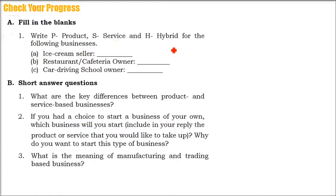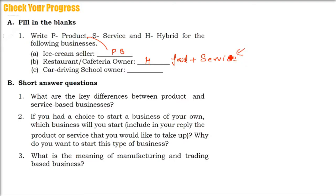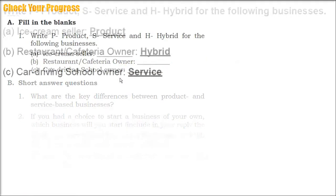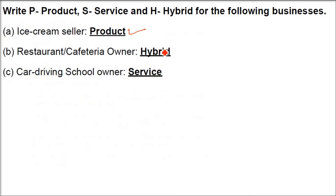Now for Q&A — P is product, S is service, H is hybrid. An ice cream seller is a product business because ice cream is a product. A restaurant or cafeteria is a hybrid business because food (a product) is involved along with services like providing the menu card, delivering the bill, and serving the food — if it is not a self-service restaurant. A car driving school owner is a service business — he is just giving you the skill to drive the car, so only service is involved.